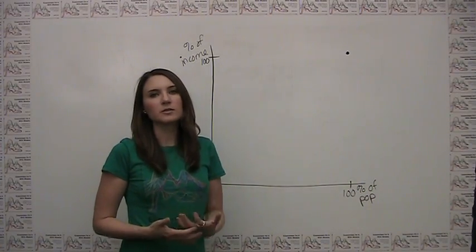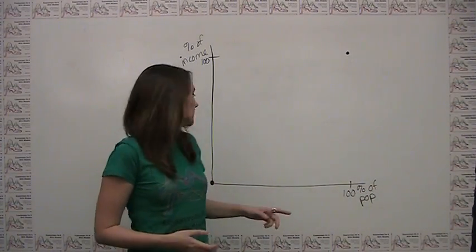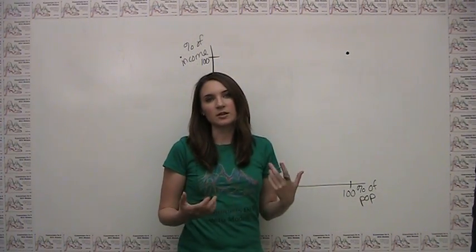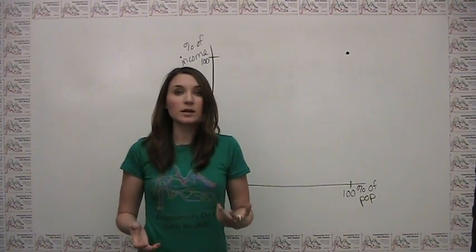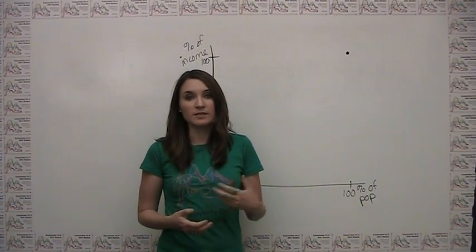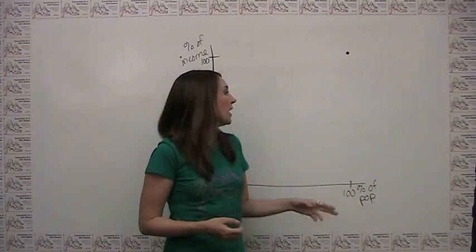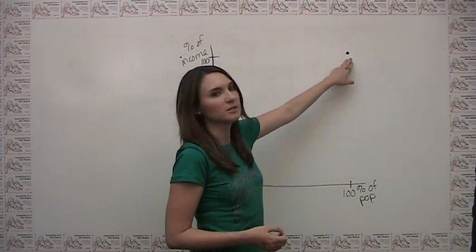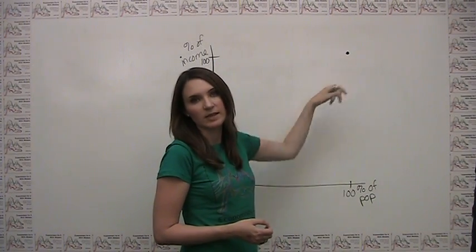We can start plotting the Lorenz curve itself by noting that the points 0-0 and 100-100 have to be the ends of the curve. This is simply because the bottom 0% of the population, which has no people in it, has to have 0% of the income, and 100% of the population, by definition, has to have 100% of the income.